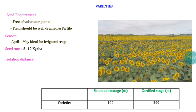Once seed moisture increases, it becomes susceptible to almost all pest and disease attacks. If sowing is done in April–May in Tamil Nadu, the crop will attain maturity before the June–July rains. Seed rate is 8 to 10 kg per hectare for varieties. For isolation distance, since sunflower is a cross-pollinated crop, we follow 400 meters for foundation stage and 200 meters for certified stage in varietal seed production.